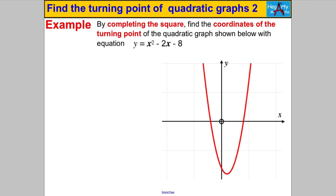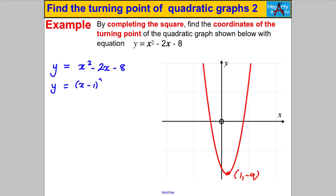For the very same curve, let's complete the square and find the turning point. The answer from the previous method was (1, −9). Let's see if we can link it. Y = x² − 2x − 8. Completing the square: (x − 1)² gives x² − 2x, and expands to add 1, so we take that 1 off and take that 8 off. Therefore y = (x − 1)² − 9.